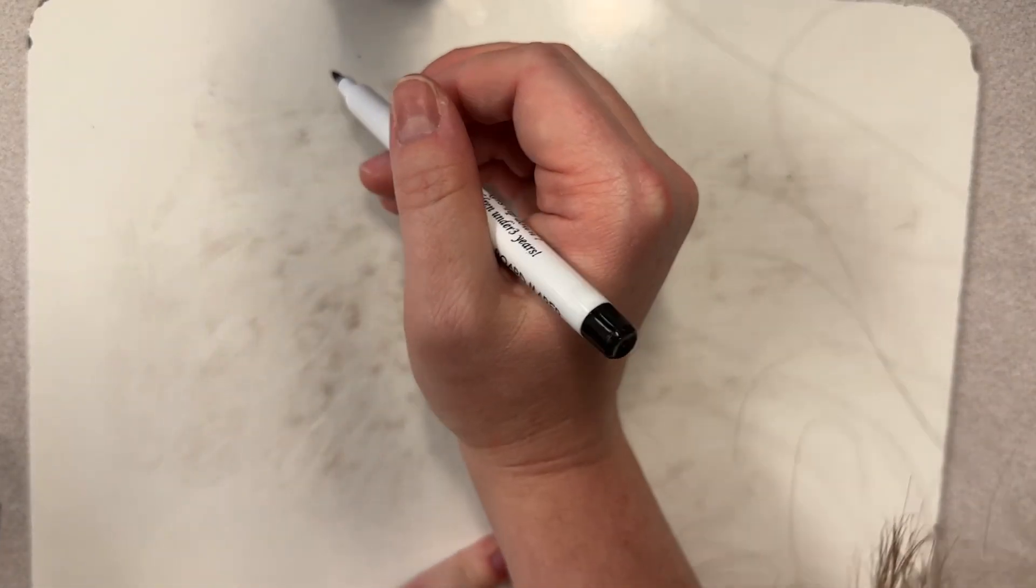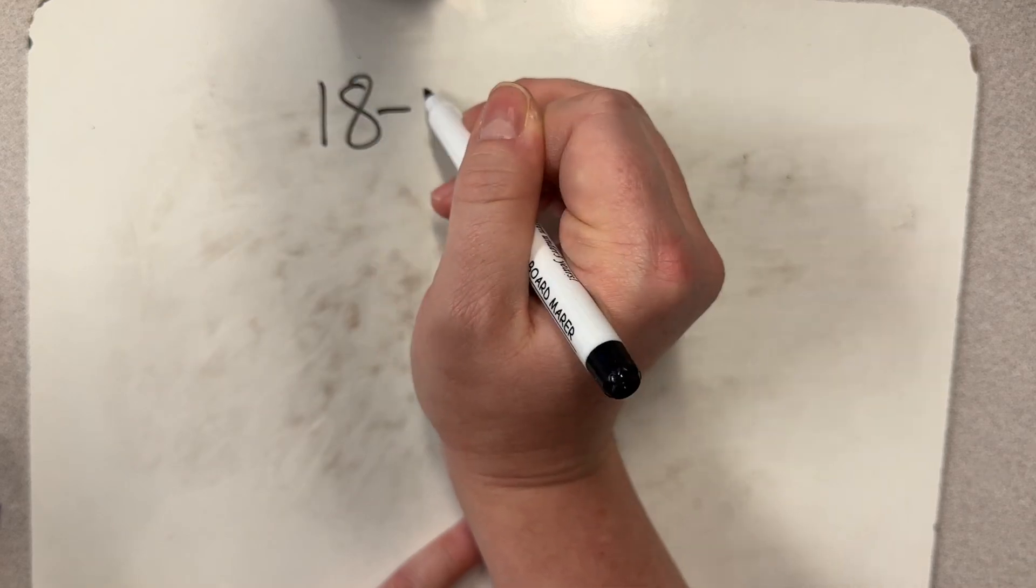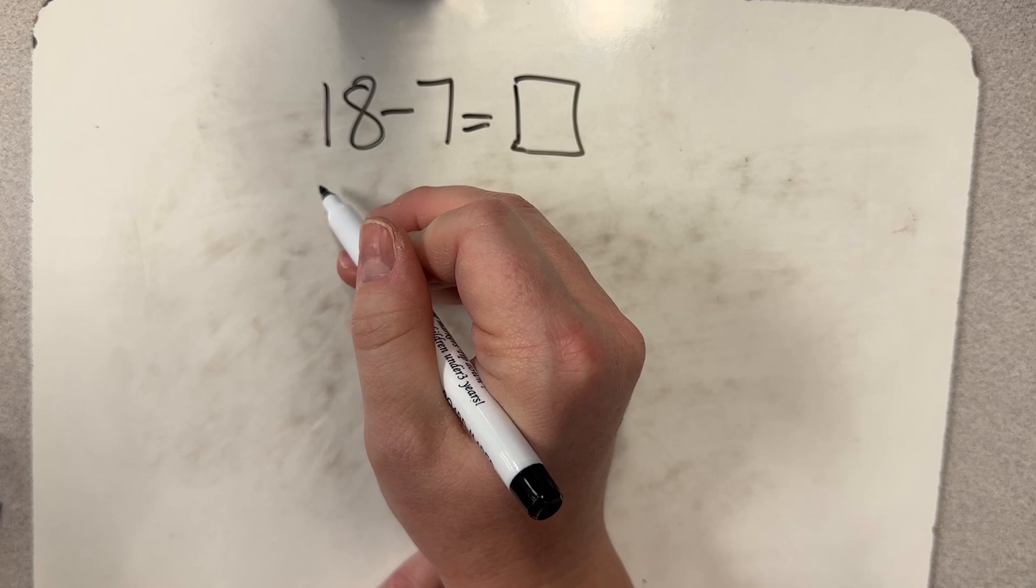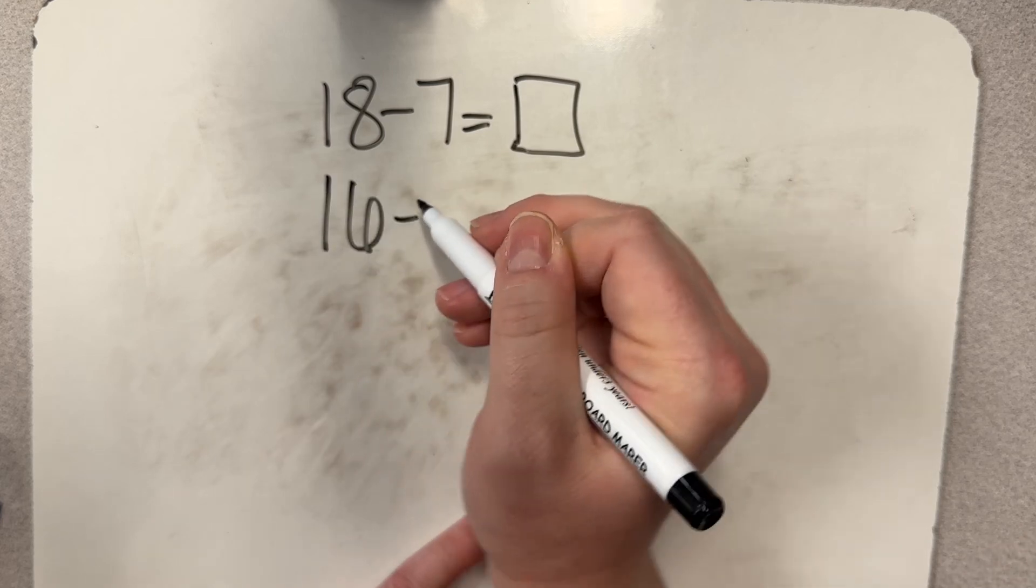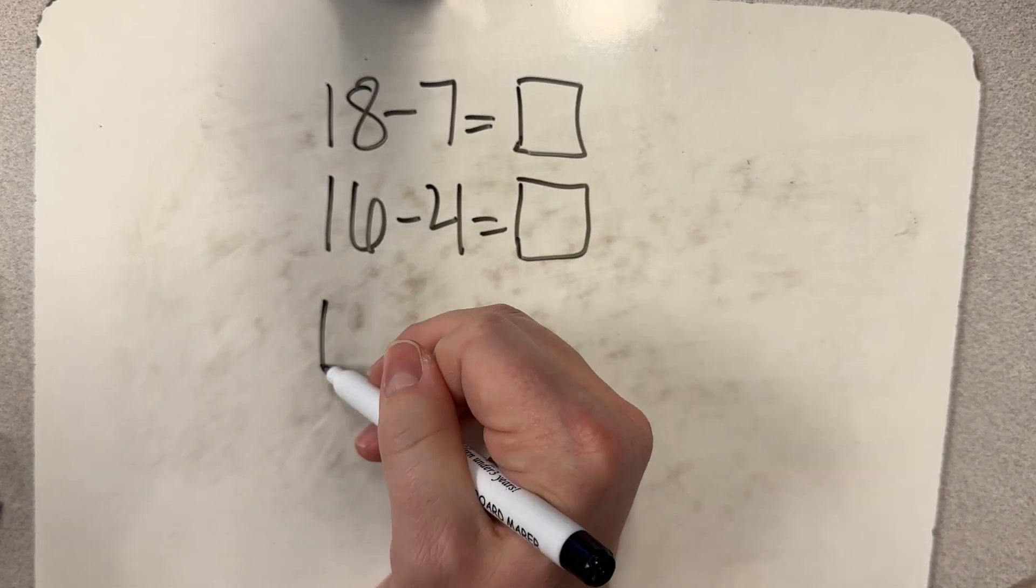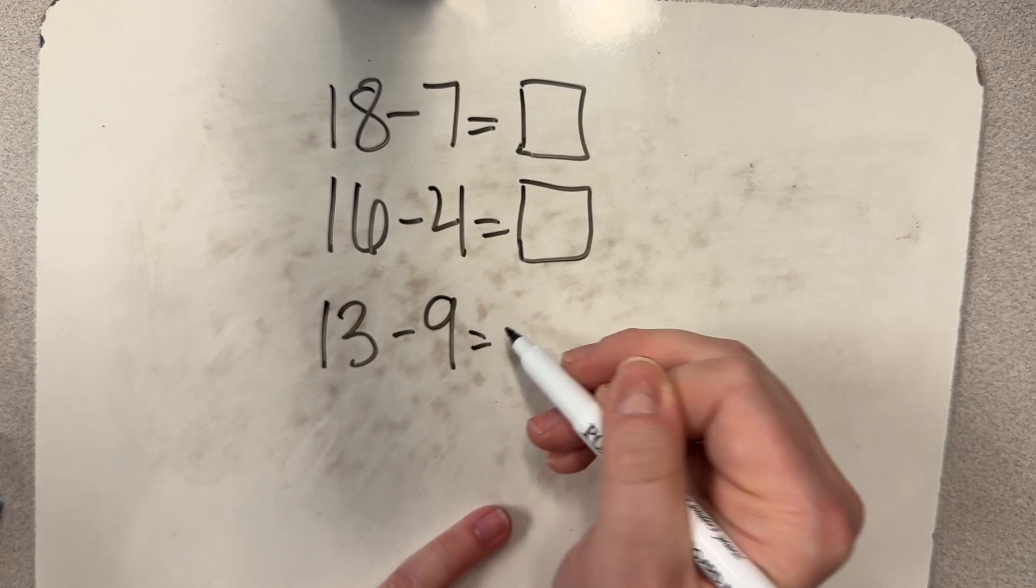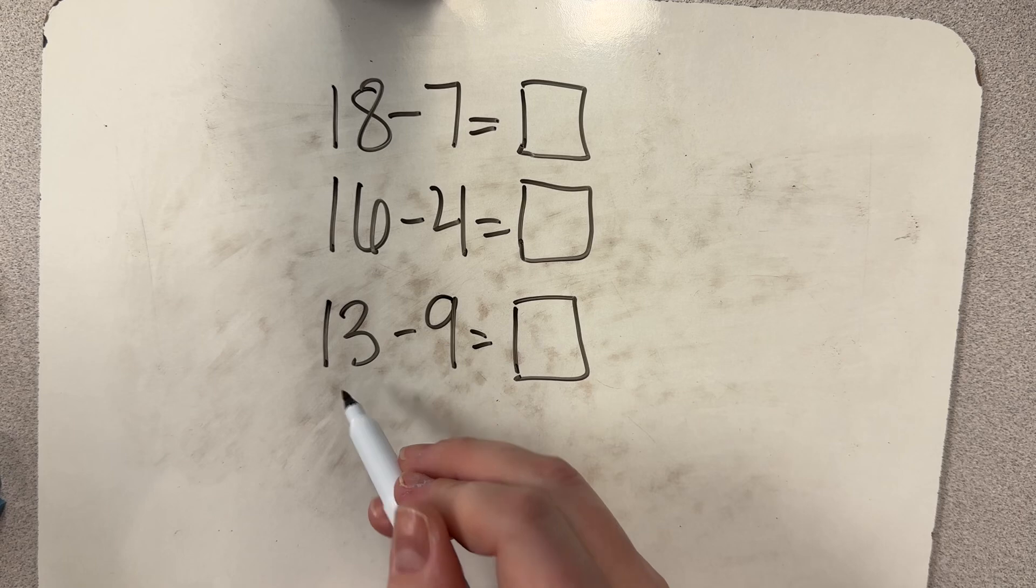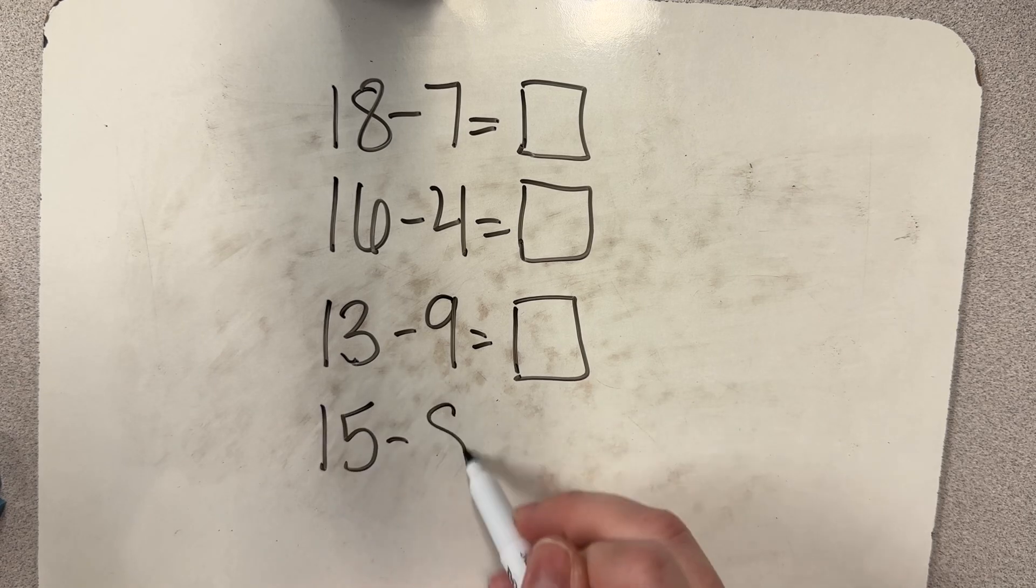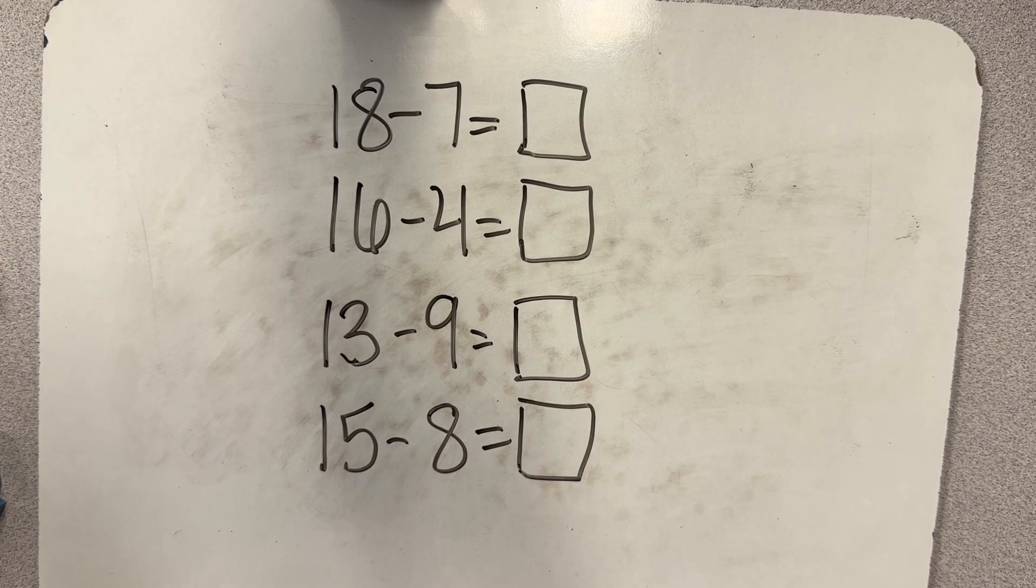Go ahead and practice these subtraction problems. The first set will have enough ones where you don't need to decompose. We have 18 minus seven. Then we will do 16 minus four. This next set does not have enough ones. So you're going to have to decompose in order to find that answer. Go ahead and pause the video and then you can check your answer.